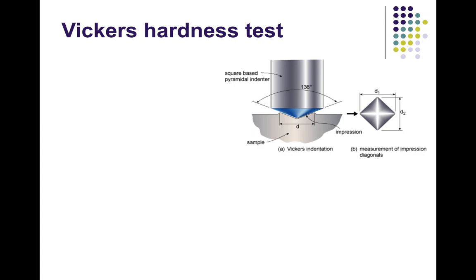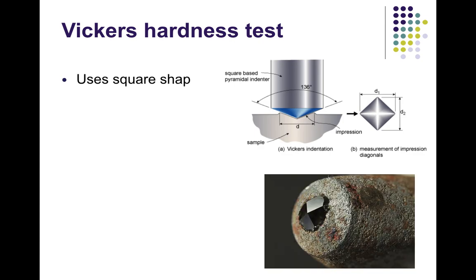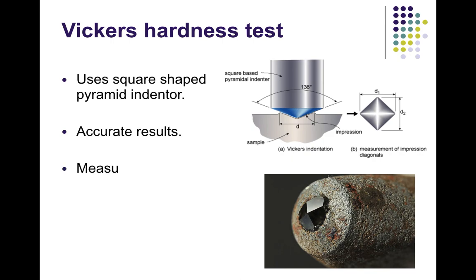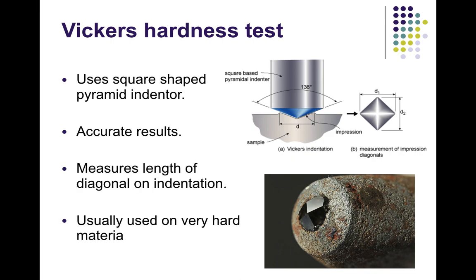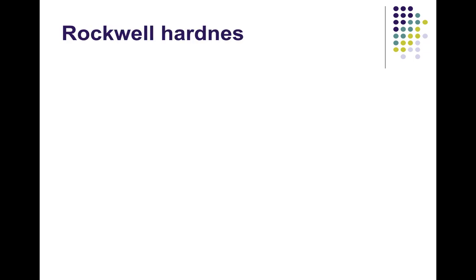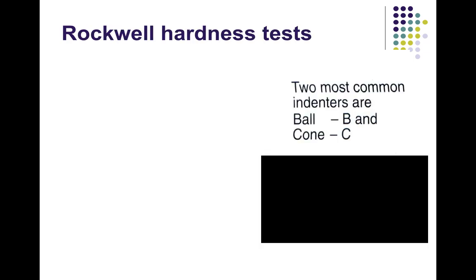In the Vickers hardness test, we use a square-shaped pyramid indenter, which gives a more accurate result. We only need to measure the diagonal of the dent formed on the material — we measure its diagonals d1 and d2 — and accordingly we check the hardness of the material.